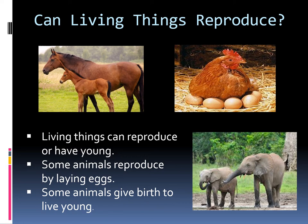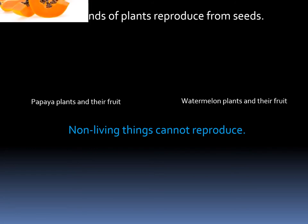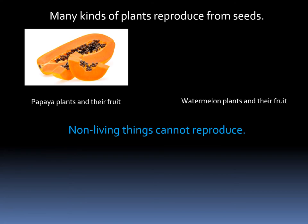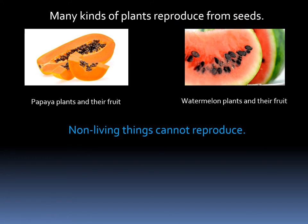From these examples we learn that living things can reproduce, or have young babies. Some animals reproduce by laying eggs, for example the hen. Plants are also living things and they also reproduce — they have seeds. There are two examples in our slides: the first is the papaya plant, and the second is the watermelon. Look at the seeds of each in the picture.